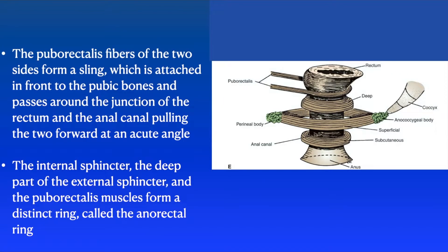The puborectalis fibers of the levator ani of the two sides form a sling which is attached in front to the pubic bones and passes around the junction of the rectum and the anal canal, pulling the two forward at an acute angle. The internal sphincter, the deep part of the external sphincter, and the puborectalis muscles form a distinct ring called the anorectal ring, which is the most important structure to prevent rectal prolapse.